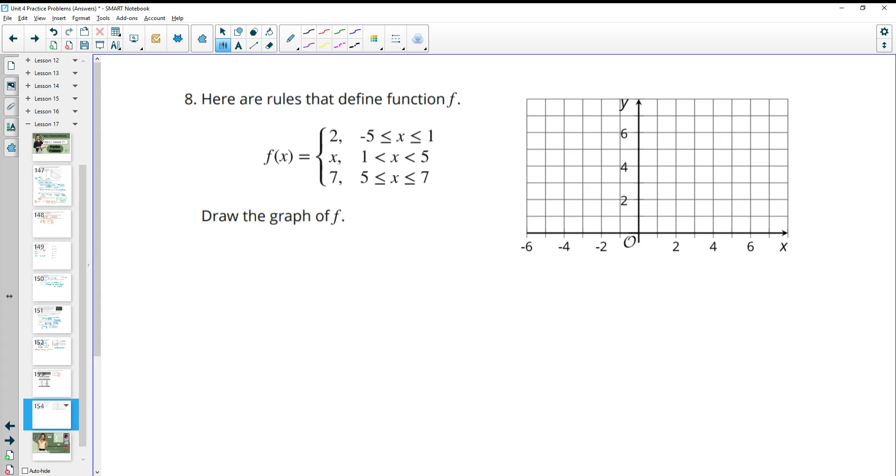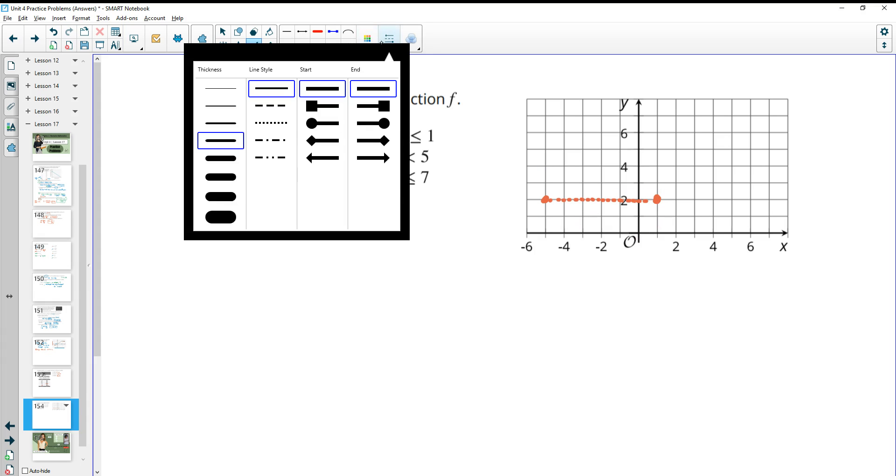Number 8, here are the rules that define function f. Draw the graph. So f is equal to 2 between negative 5 and 1 for the x. So between x equals negative 5. So at x equals negative 5, the graph is 2. At all the numbers up until x equals 1, it's also 2. So every number in between here, it's also at 2. So we can just draw a straight line that connects that.